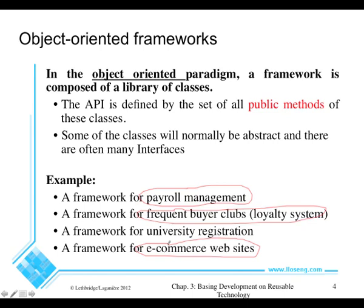So you'd have to write some code; the application would need to be enhanced to turn it from a framework into an application. Systems for university registration and student information systems are another example of something which might come as a framework that you would have to adapt to meet your needs. For example, here at the University of Ottawa, we have bilingual courses, and so we might have to adapt a framework to allow it to work in both languages.